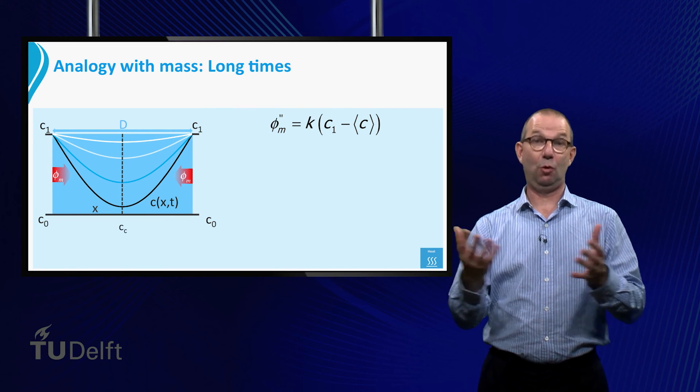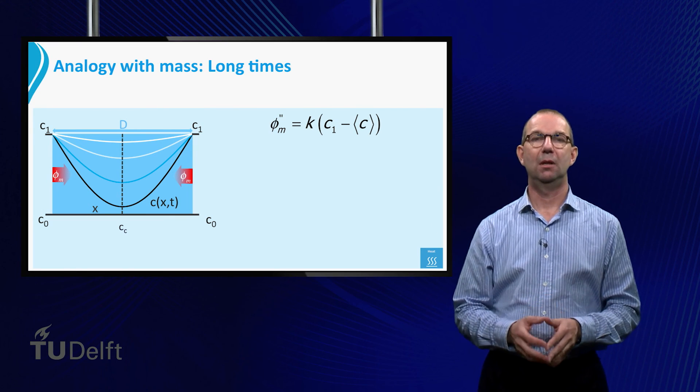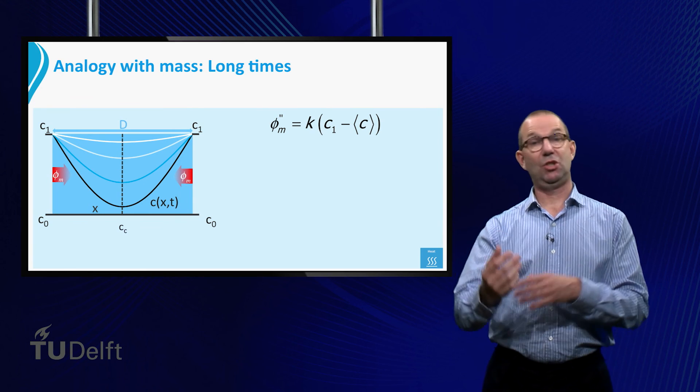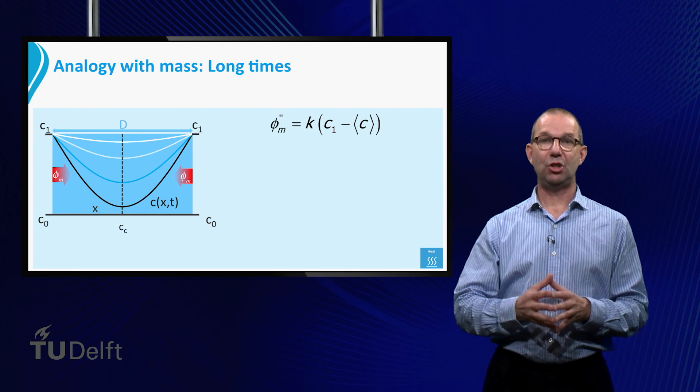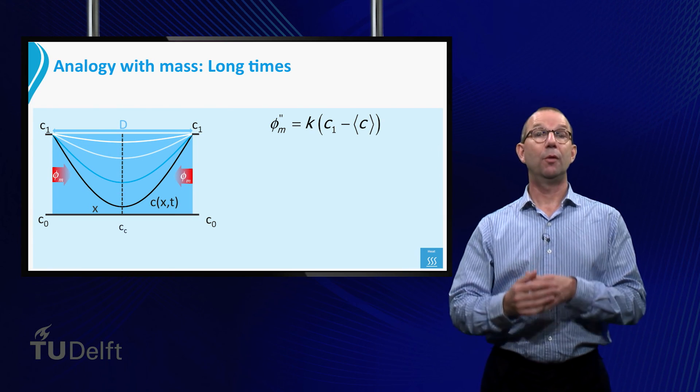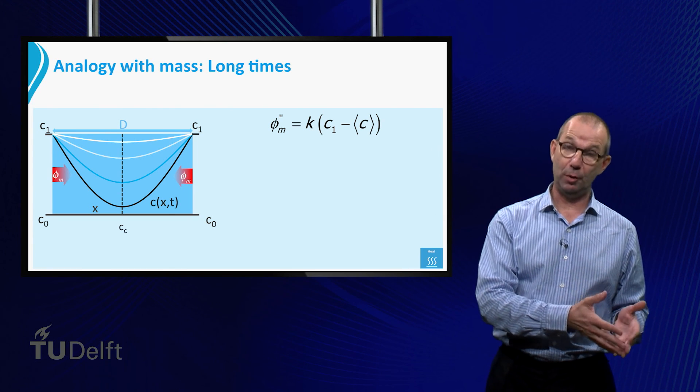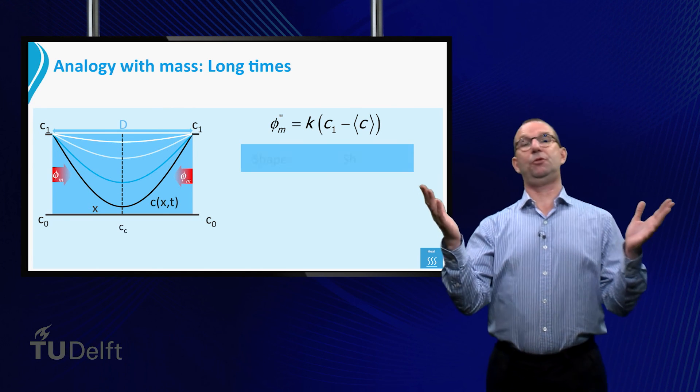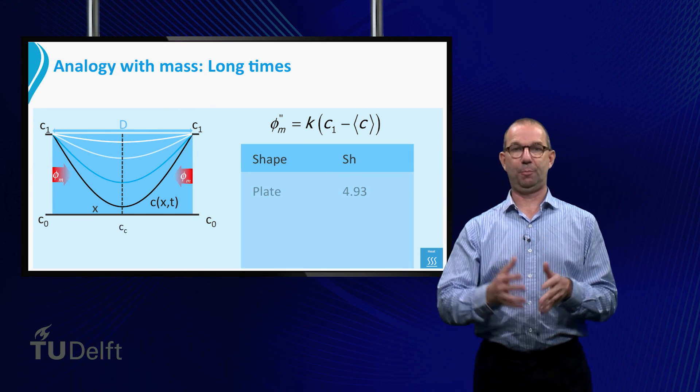We write the mass flux as K times the driving force, for instance based on the mean concentration. Then we give Sherwood instead of K. For the shapes we studied, this gives for the plate, Sherwood is 4.93. For a very long cylinder, Sherwood is 5.8. And for a sphere, Sherwood is 6.6.